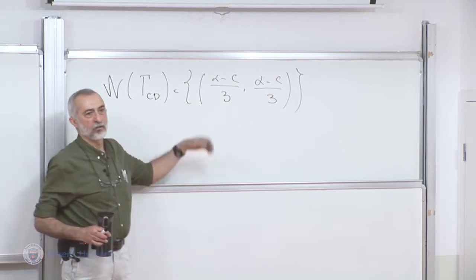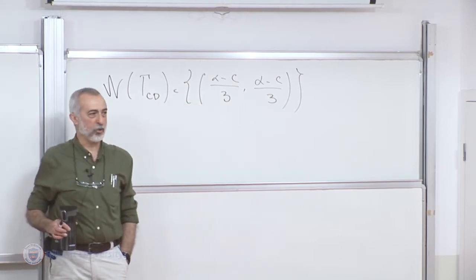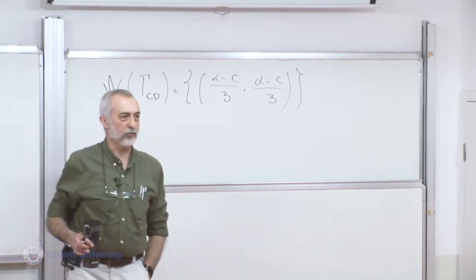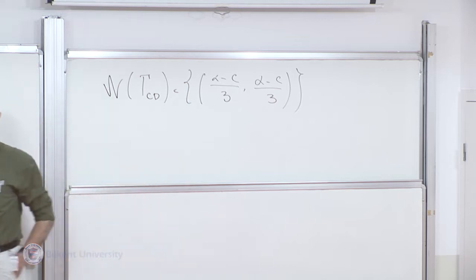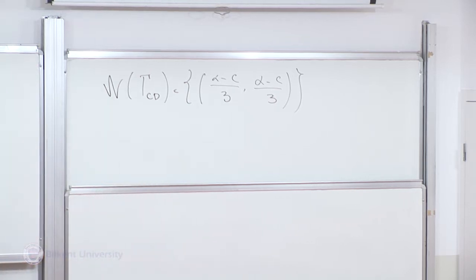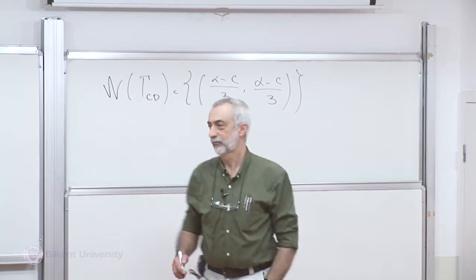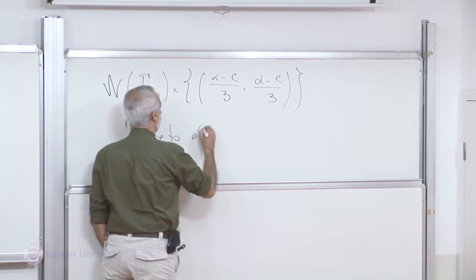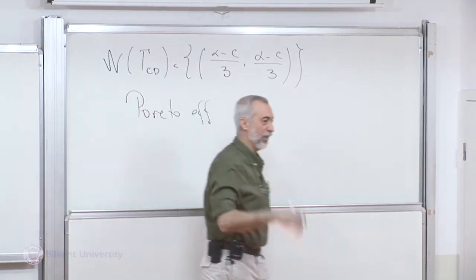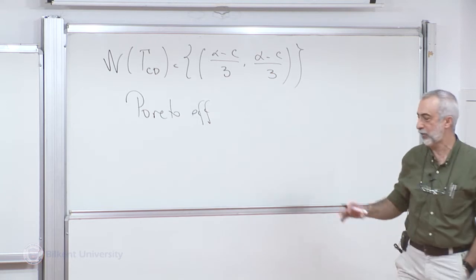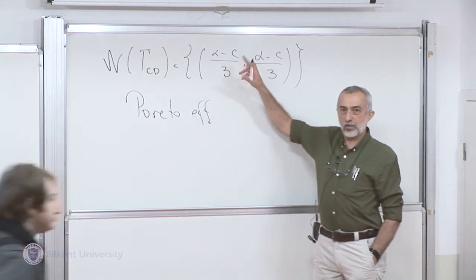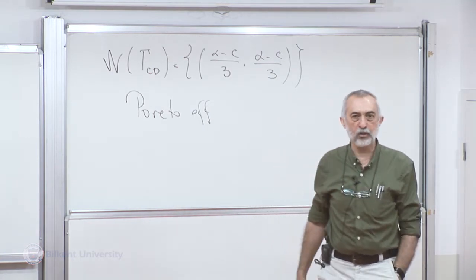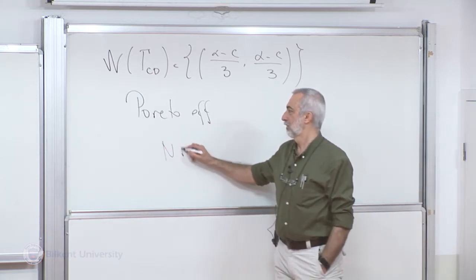Some of your friends claimed it was Pareto efficient. So is this Nash equilibrium of the Cournot duopoly Pareto efficient or not? Some say Nash equilibria are Pareto efficient. Well, in general we know that's not the case. So is this specific Nash equilibrium of the Cournot duopoly Pareto efficient or not?